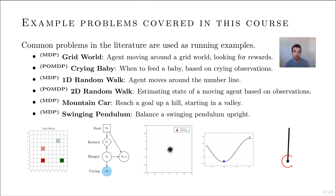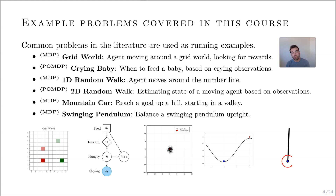We'll also talk about the classic mountain car problem — how do you get a car to use momentum to swing up a hill to reach a flag. That's where we'll discuss approximate methods to discretize a continuous space. And lastly, for deep reinforcement learning and imitation learning, we'll use a classic control problem called the swinging pendulum, which balances a swinging pendulum upright using torque actions.